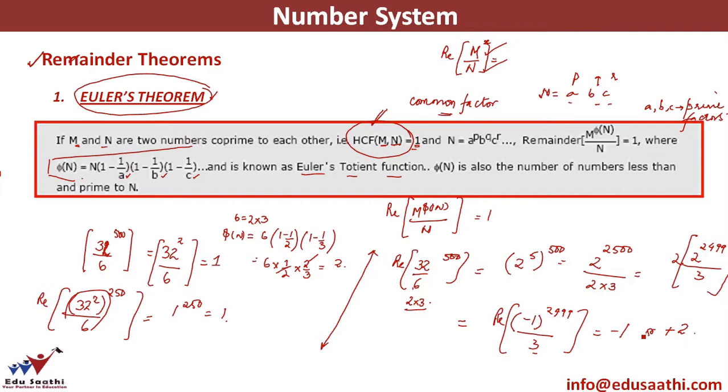Minus 1 remainder with 3 can be converted into a plus remainder which means it can be written as plus 2. So what is the remainder that I have got now? Plus 2. My final remainder would be this 2 into this 2 which is giving me an answer of 4, which is the correct answer.